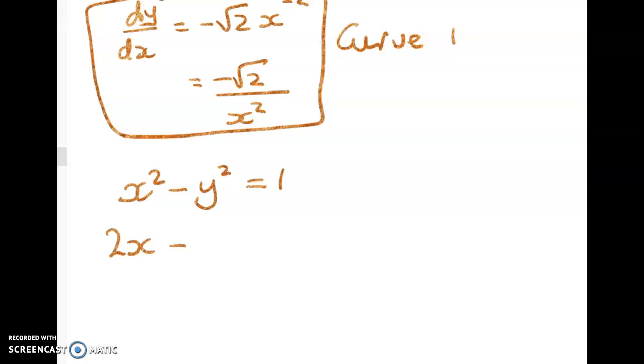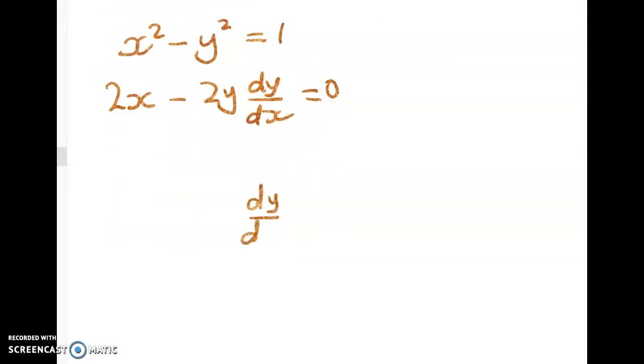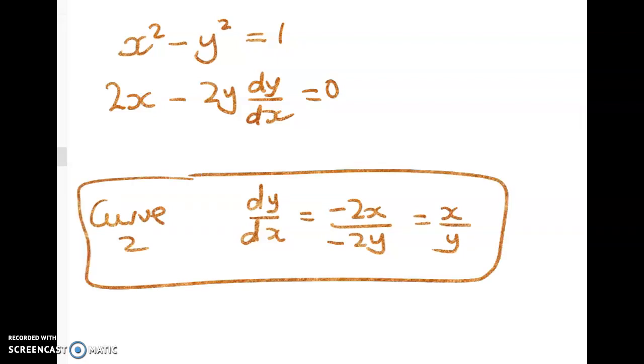So differentiating this I get 2x minus 2y dy by dx is equal to 0 and that gives me dy by dx is equal to negative 2x over negative 2y which is x over y. So we're going to call this curve 2 and that's the gradient for curve 2.